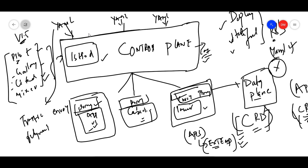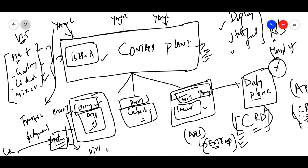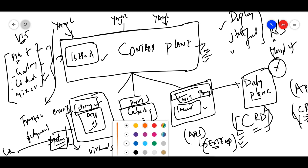When a client request comes into the pods, it first reaches a gateway. The gateway then talks to a virtual service via the proxy. So we create a virtual service — the virtual service connects through the proxy to the application.